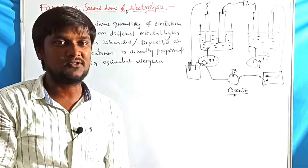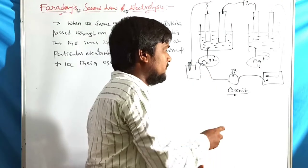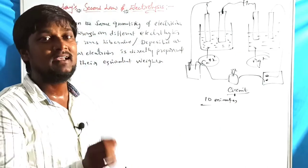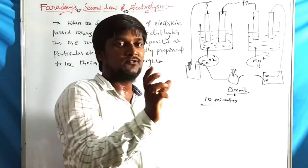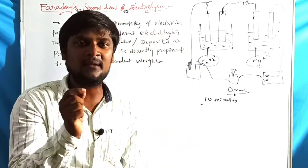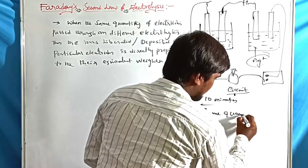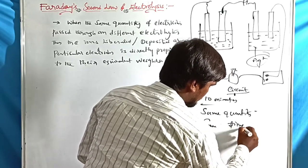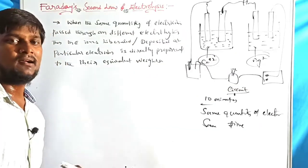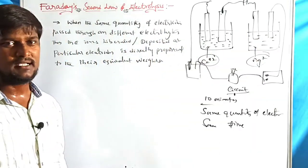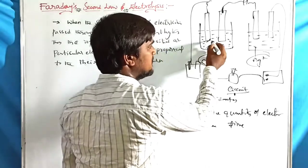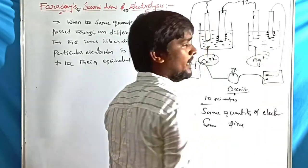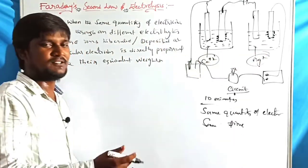We have a copper sulfate solution and a silver sulfate solution. Whenever we switch on the circuit for ten minutes, we pass current through these two different electrolytes. The same quantity of current — say five amperes — passes through both electrolytes. The same quantity of electricity and the same time are maintained for the two different electrolytic cells, causing deposition at the cathode in each case.